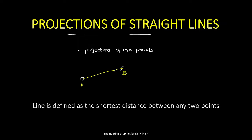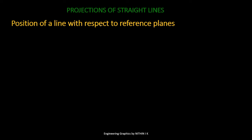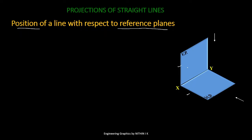The projection of line AB is its orthographic projection. Orthographic projection of a straight line means projecting the end points A and B. Projections of points have already been discussed. Therefore, projection of straight lines is the projection of the end points of that line, based on the position of the line with respect to the reference planes HP and VP.